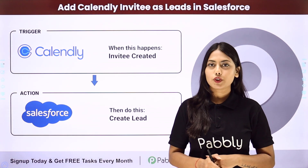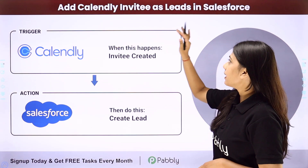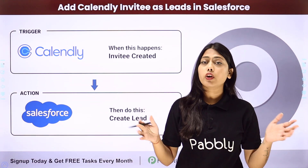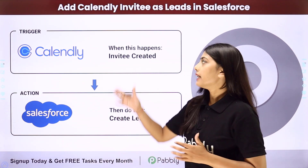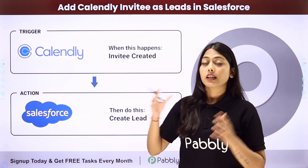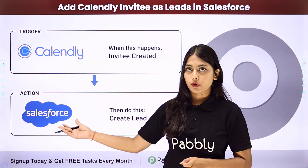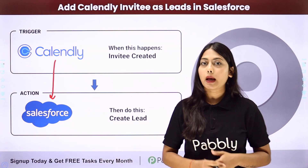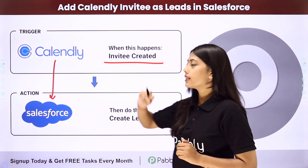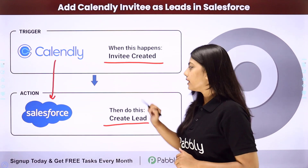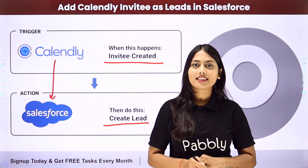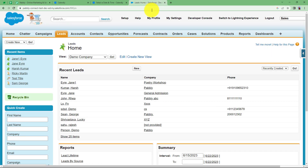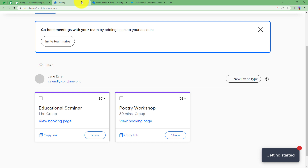Hello everyone. In this video we are going to learn how to add Calendly invitees as leads in Salesforce. There are multiple events in your Calendly, and if for any specific event or for all events an invitee registers themselves, that data will be used to create a lead in Salesforce. We are going to integrate both applications, and in this automation created using Pabbly Connect, the trigger will be the invitee created in Calendly and the action will be to create a lead in Salesforce.